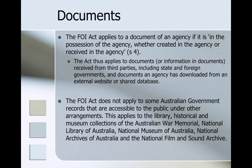The FOI Act applies to a document of an agency if it is in the possession of the agency, whether created or received by the agency. Thus, the Act applies to documents received from third parties, including state and foreign governments, and documents an agency has downloaded from an external website or a shared database. However, the FOI Act does not apply to government records accessible to the public under other arrangements — for example, the library, historical and museum collections of the Australian War Memorial, National Library of Australia, National Museum of Australia, National Archives of Australia, and the National Film and Sound Archive.